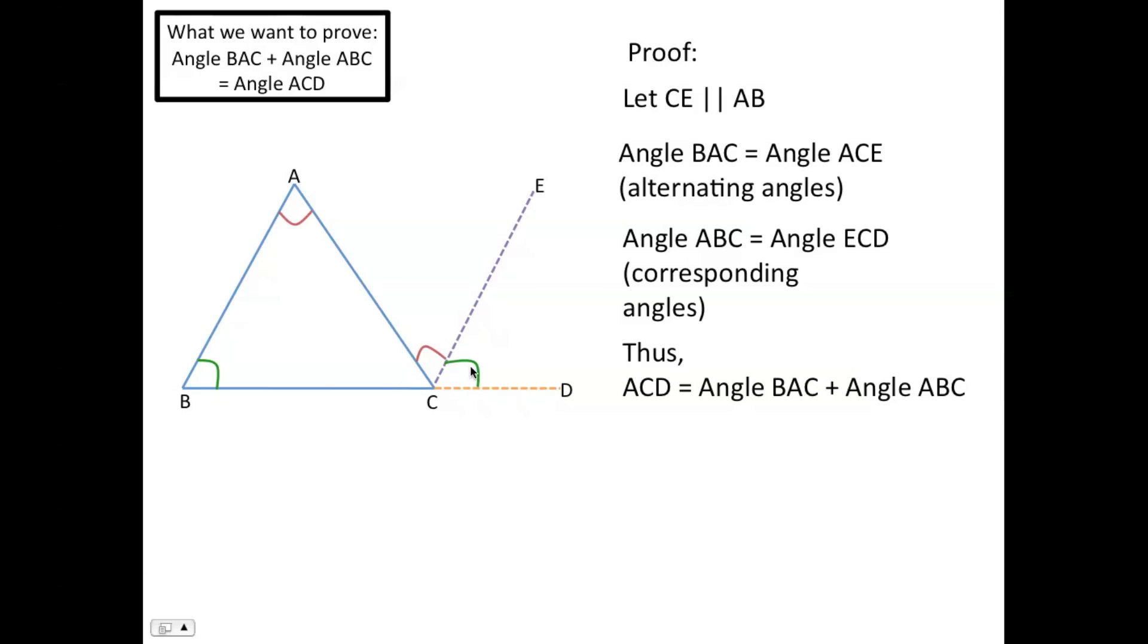So all three of these together form the line BD, which is 180 degrees. Thus, the sum of the interior angles in the triangle are 180 degrees.